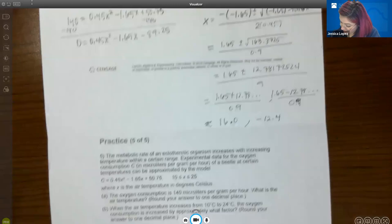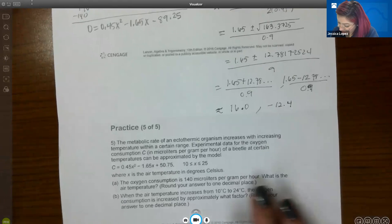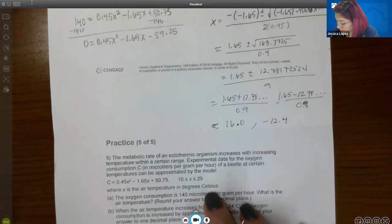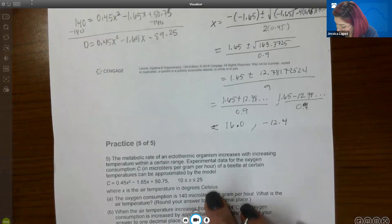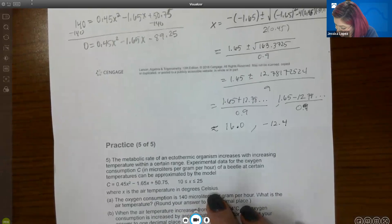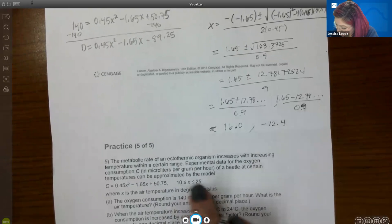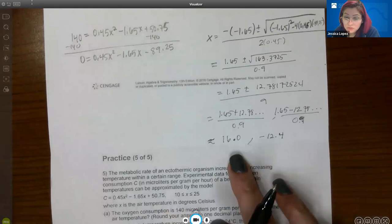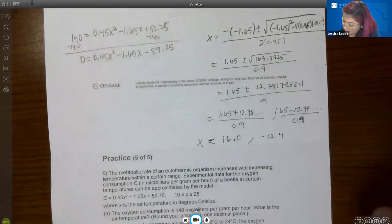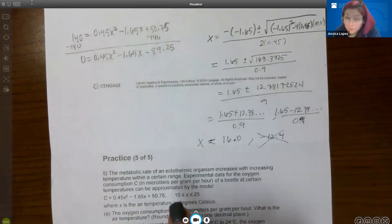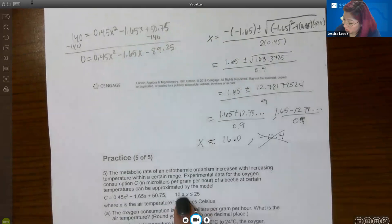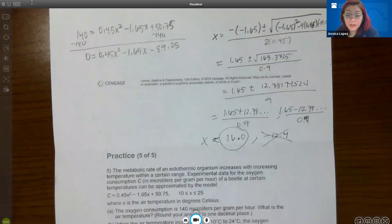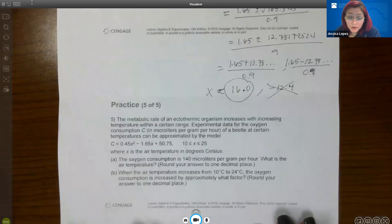Now it does say write the temperature. It's in degrees Celsius. It doesn't make sense for it to have... Oh, here you go. Your X is going to be between 10 and 25. So between these two X values, because these are X, right? This one is not in the particular range, okay? So that means my only answer is going to be the 16. So that's for part A.